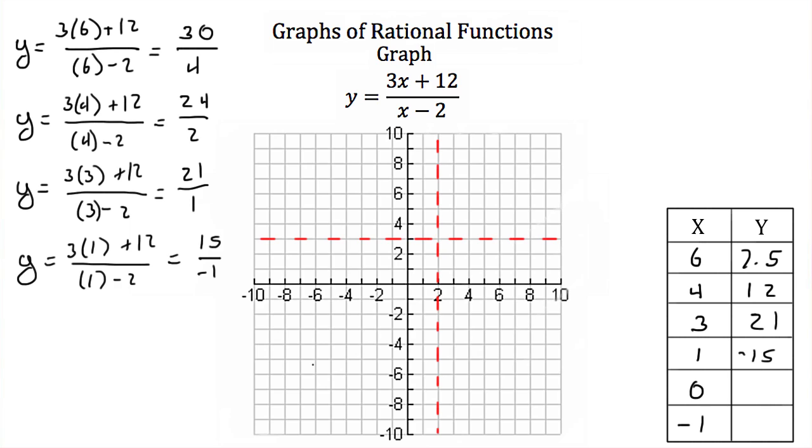Now I'm going to plug in 0 for x. So I'll have y equals 3 times 0 plus 12 all over 0 minus 2. 3 times 0 is 0, add 12, you just have 12. 0 minus 2 is negative 2, and 12 divided by negative 2 is negative 6.